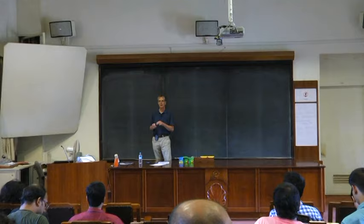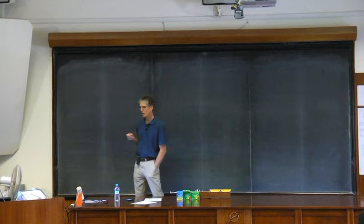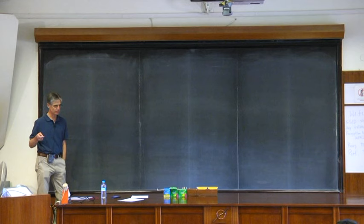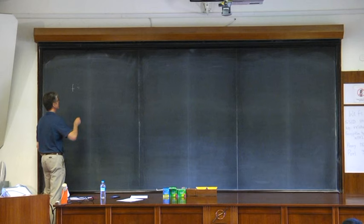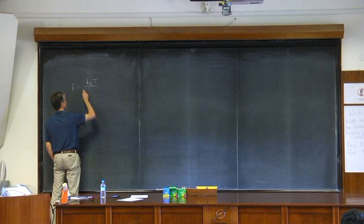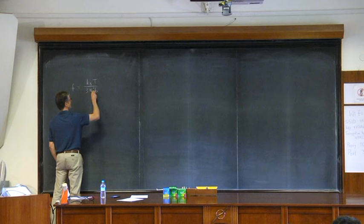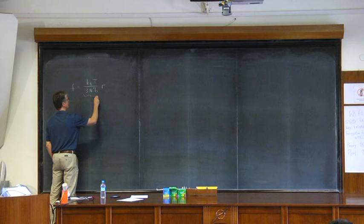Let's pick up where we left off last time. First of all, we found that for a polymer chain, the force it takes to extend it is given by K_B T over 3N B squared times R. This is the spring constant.